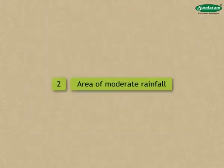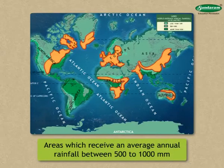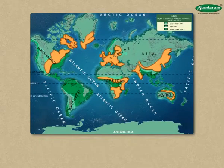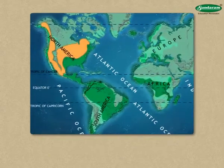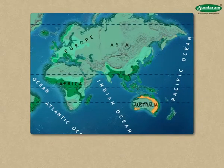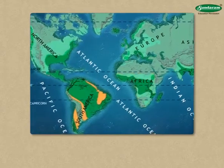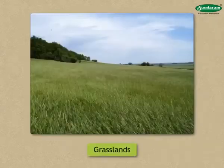Areas of moderate rainfall: Areas which receive an average annual rainfall between 500 to 1000 mm are included in this category. This comprises the eastern part of the continents of North America, Asia, and Australia, as well as parts of South Africa, South America, and Europe. In this region, mainly grasslands are found.